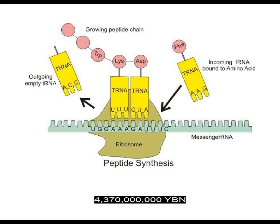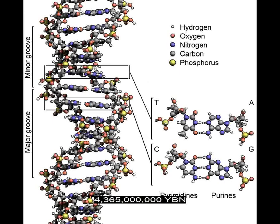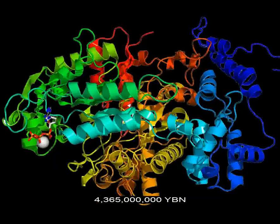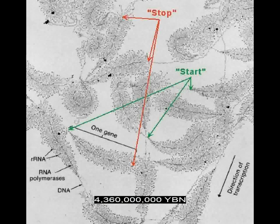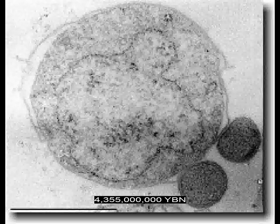Ribosomes are the cellular organelles that carry out protein synthesis through translation. These molecular machines accurately translate the linear genetic code on the messenger RNA, mRNA, into a linear sequence of amino acids to produce a protein. The first deoxyribonucleic acid, DNA molecule. A protein evolves that allows the assembly of DNA from RNA — a ribonucleotide reductase. This protein changes ribonucleotides into deoxyribonucleotides, which allows the first DNA molecule on Earth to be assembled. A protein can copy DNA molecules — a DNA polymerase. Transcription: a protein assembles RNA from DNA.